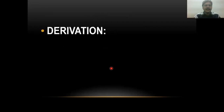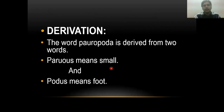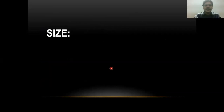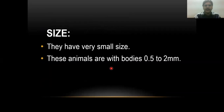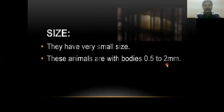The next point is name derivation. The name Pauropoda is divided into two words: 'pauros,' meaning small, and the second word meaning foot. The next topic is the size of Pauropods — they are very small in size, reaching up to 0.5 to 2 mm.